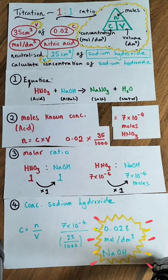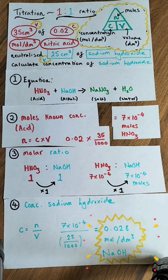And finally, we can convert our moles of alkali into a concentration. Concentration equals moles over volume. Ensure you convert your volume into decimates cubed by dividing by a thousand and you'll get your answer.